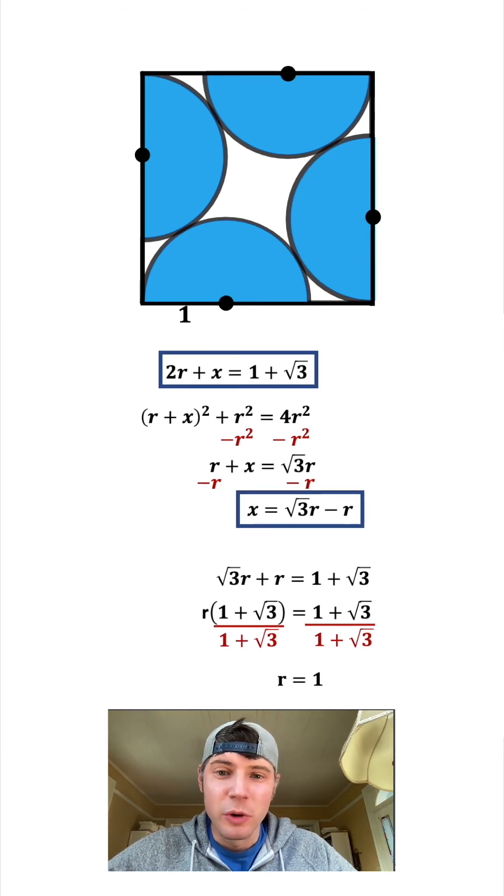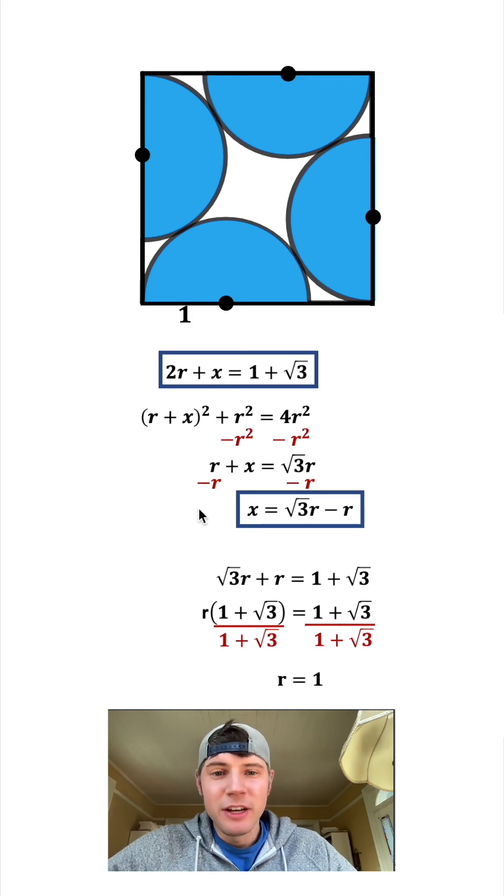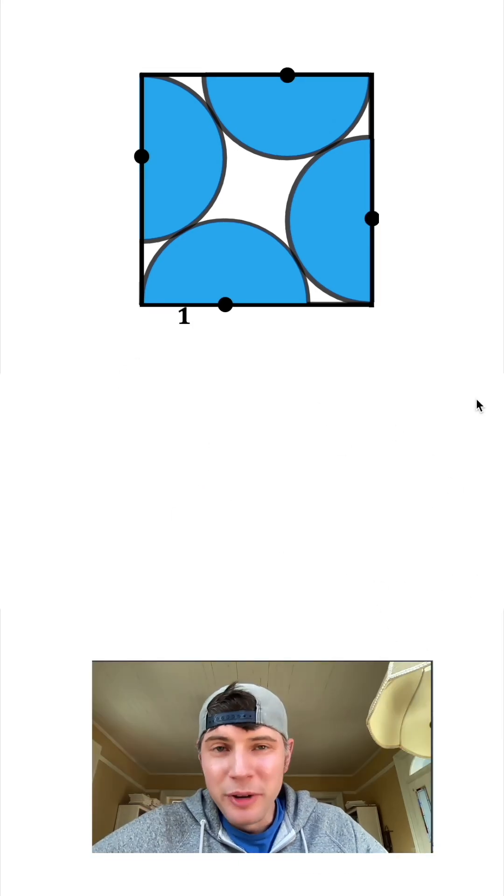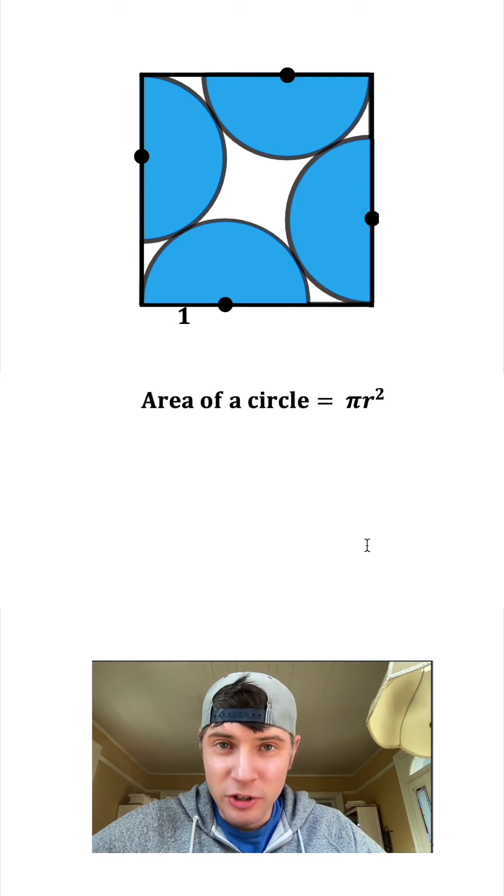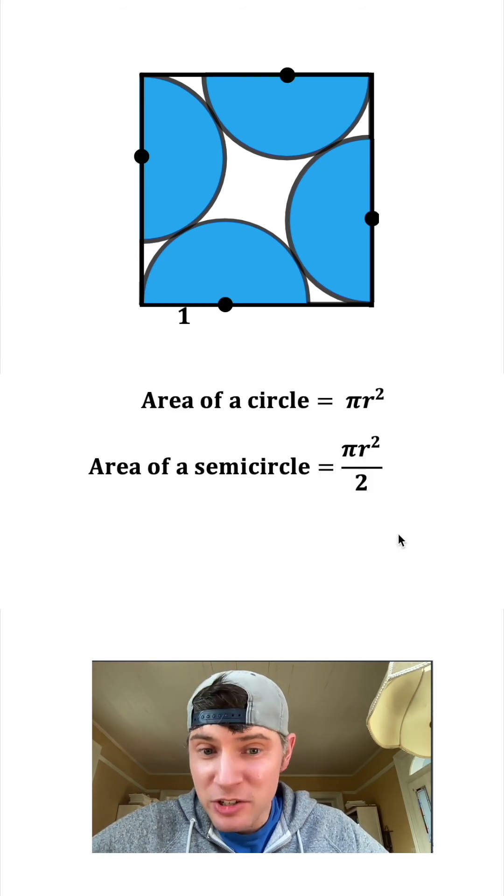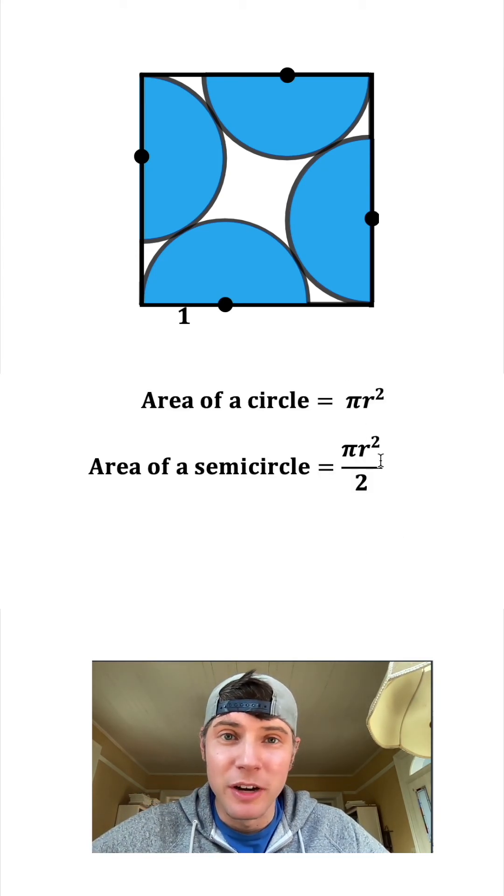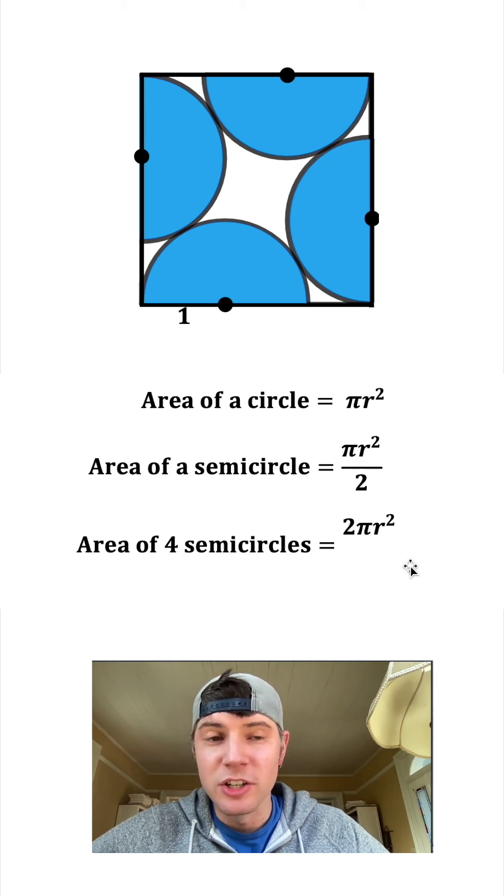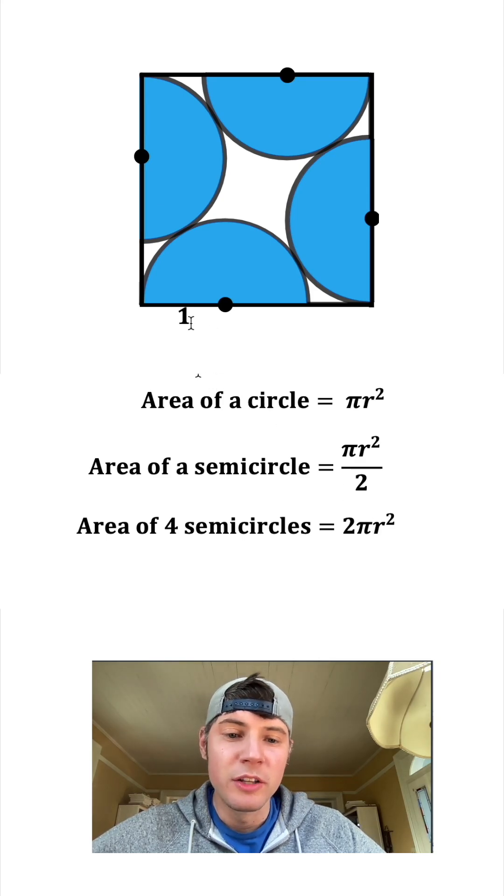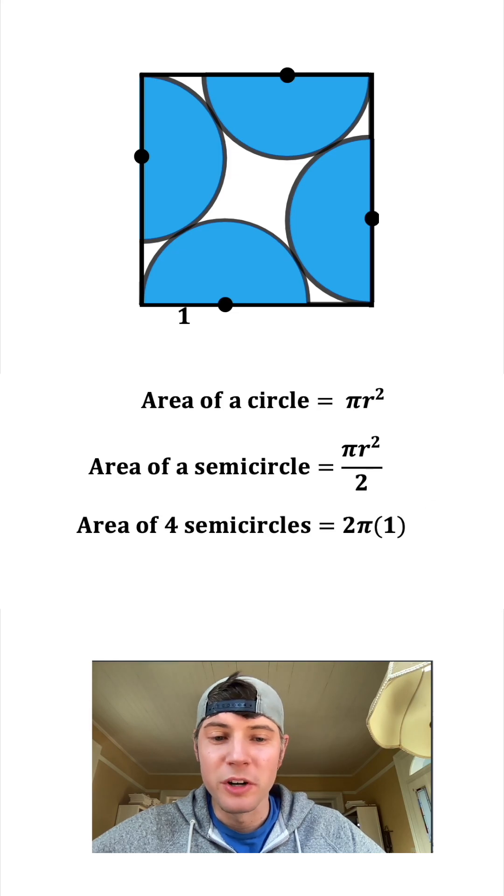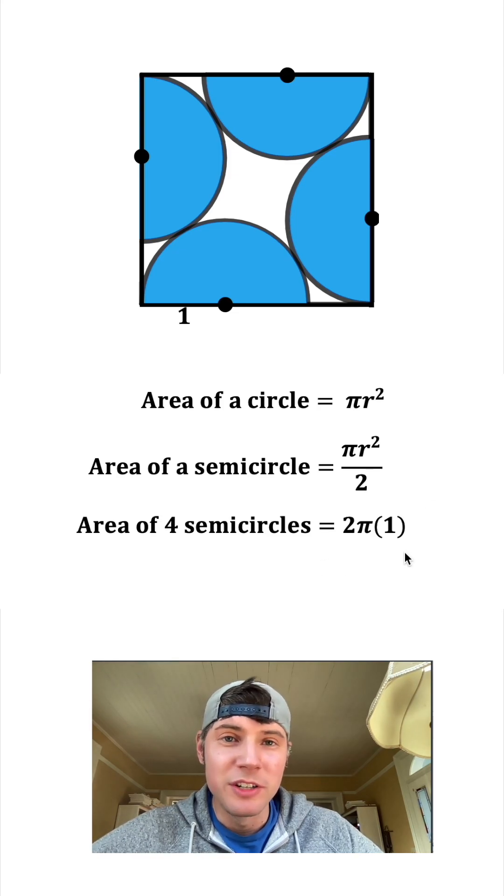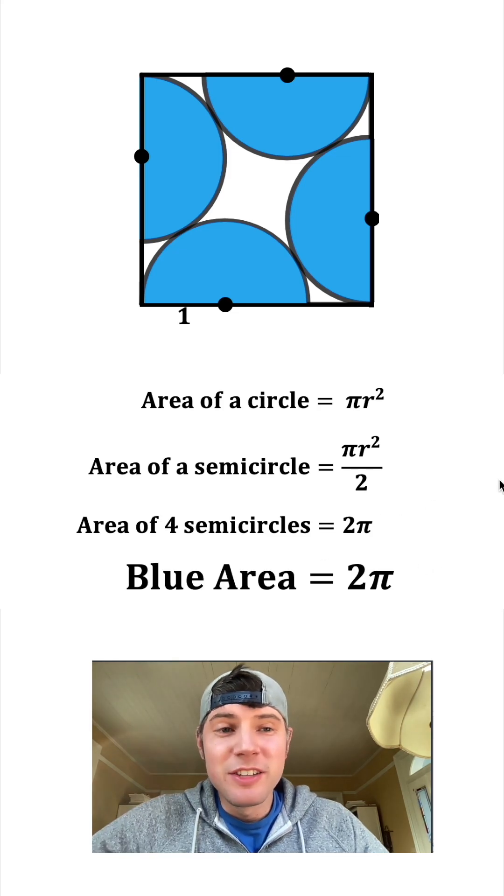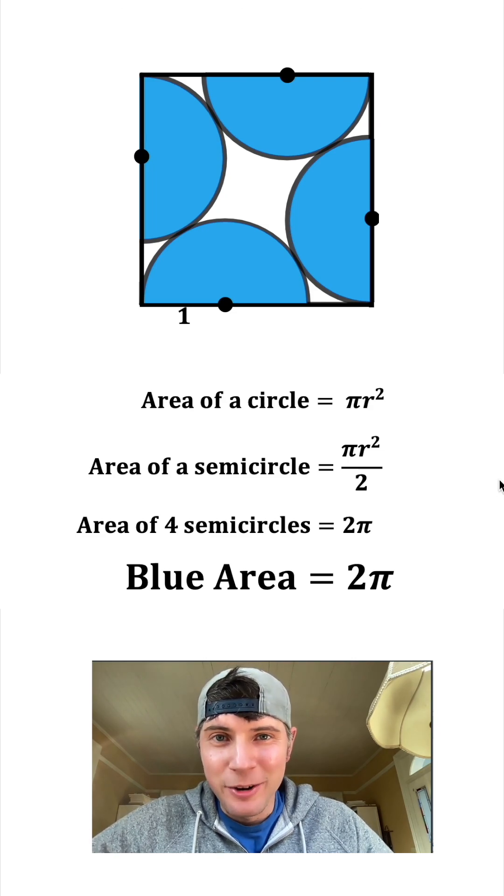Now we're ready to solve for the blue area. The area of a circle is πR squared. The area of a semicircle is πR squared divided by 2. With four semicircles, the total area is 4πR squared divided by 2, which simplifies to 2πR squared. Since R equals 1, this becomes 2π times 1 squared, which equals 2π. So the blue area equals 2π.